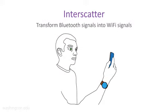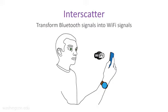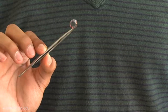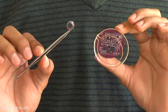InterScatter transforms Bluetooth signals into Wi-Fi transmissions by using only reflections. Say that a user has a smartwatch and a smartphone. InterScatter simply absorbs or reflects Bluetooth transmissions from the smartwatch and transforms them into Wi-Fi packets with their own data. Here we show a contact lens form factor antenna and an antenna for implanted brain-machine interfaces.